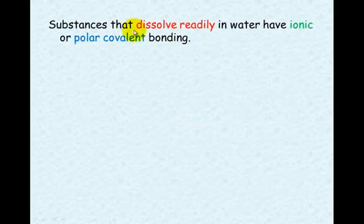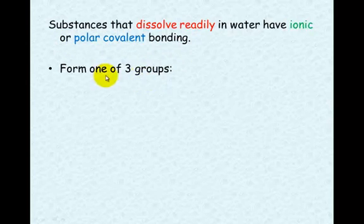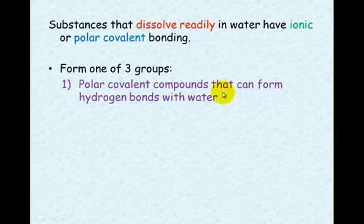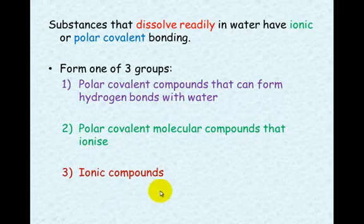Substances that dissolve readily in water have either ionic or polar covalent bonding, and they form one of three different groups: polar covalent compounds that can form hydrogen bonds with water, polar covalent molecular compounds that ionize, or ionic compounds. We're going to discuss each of those now.